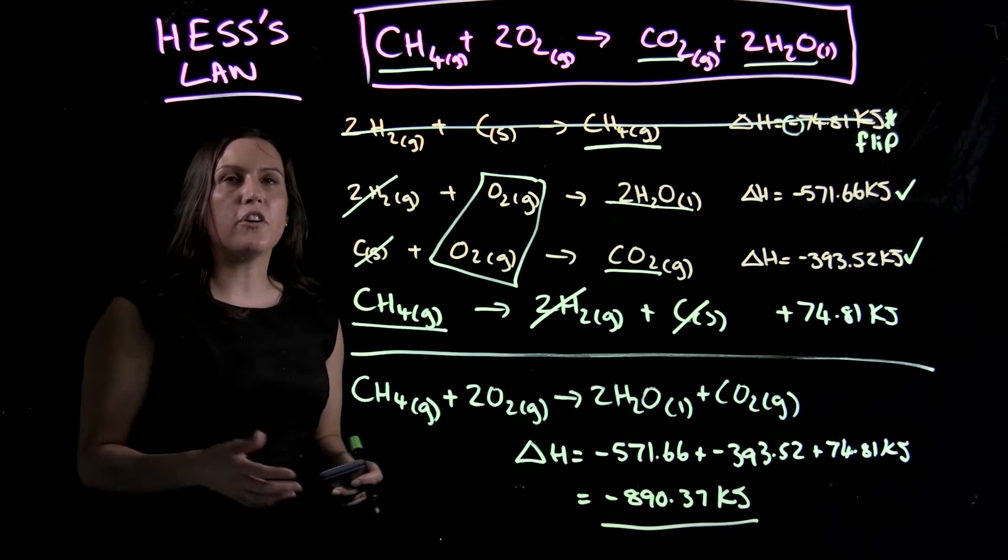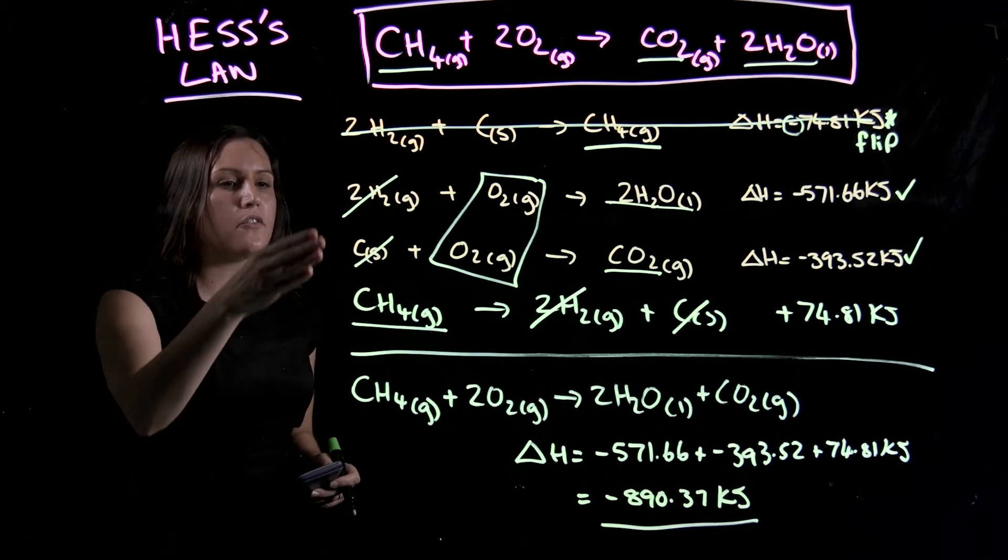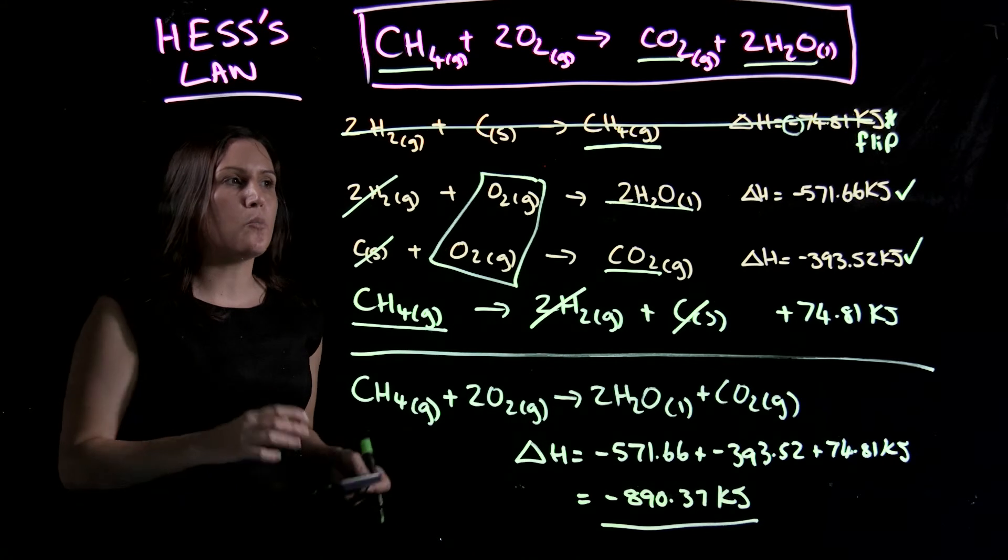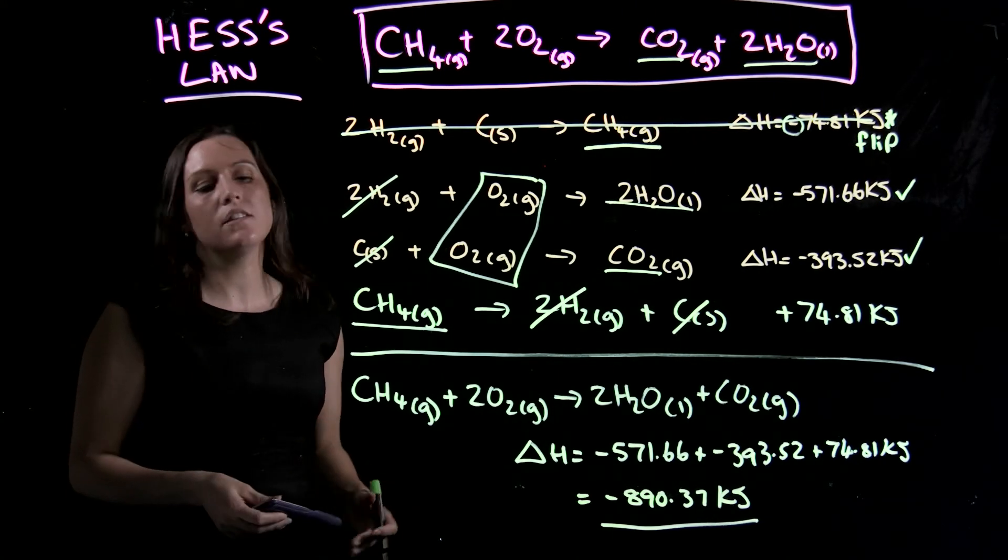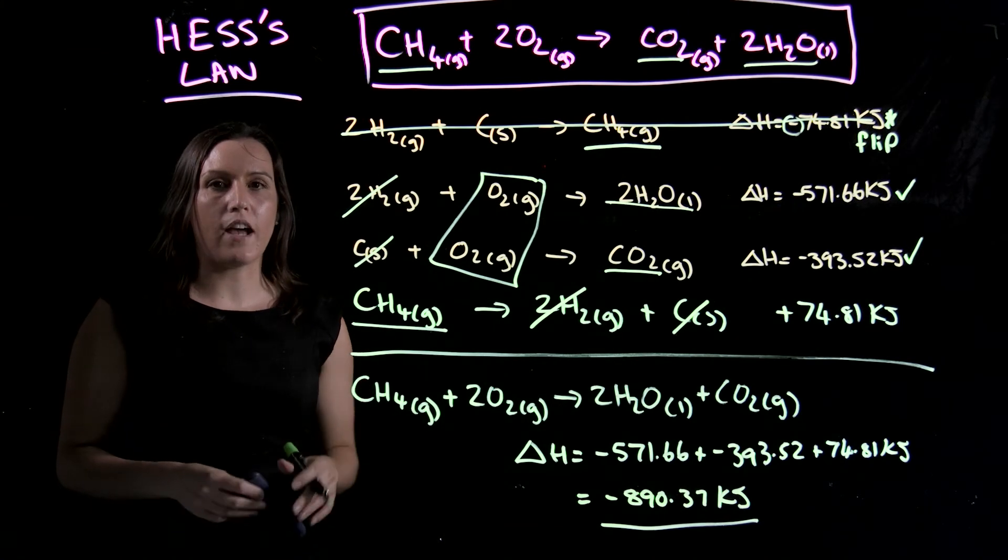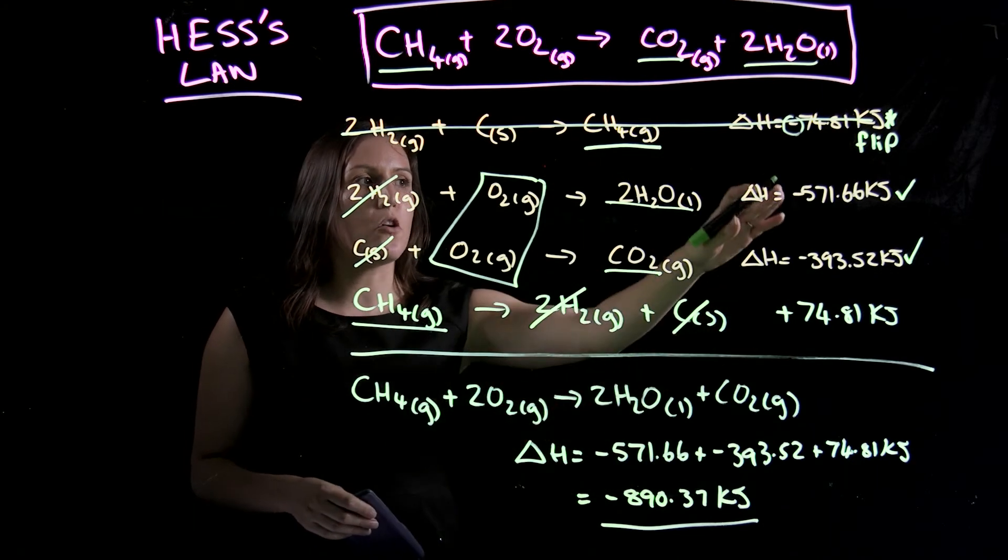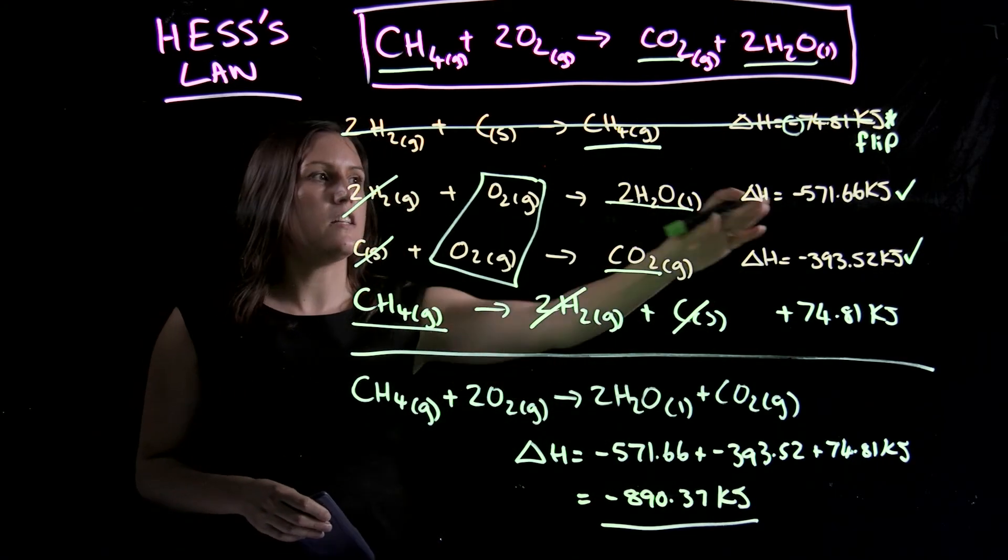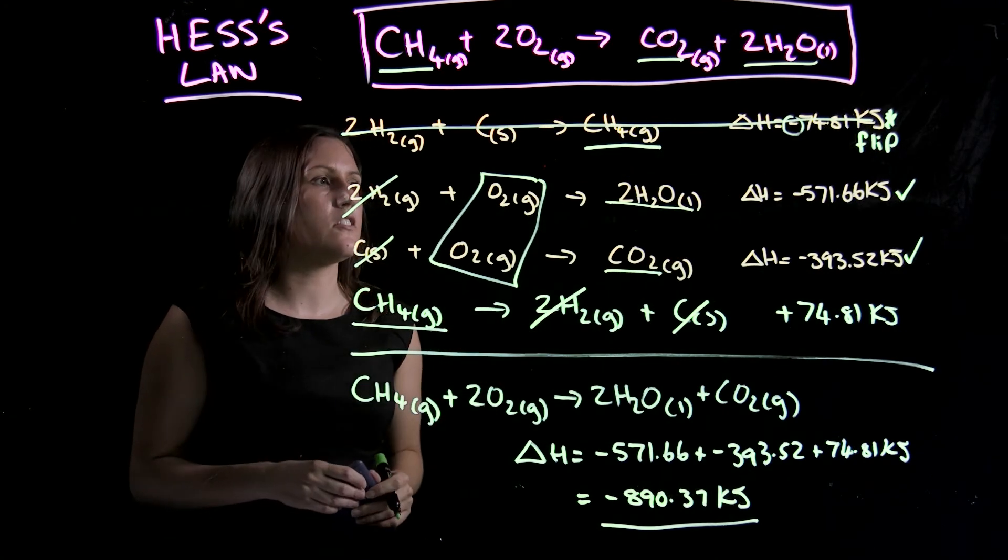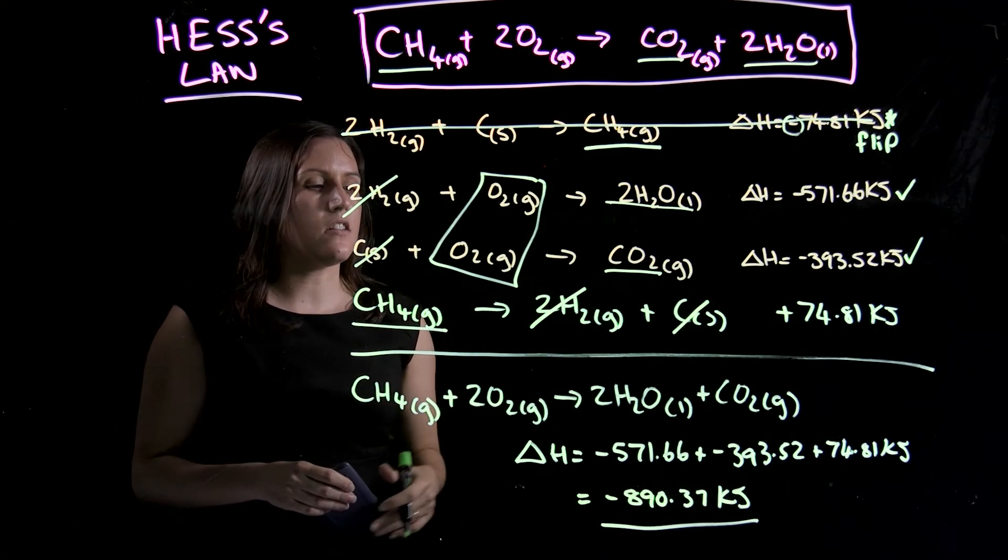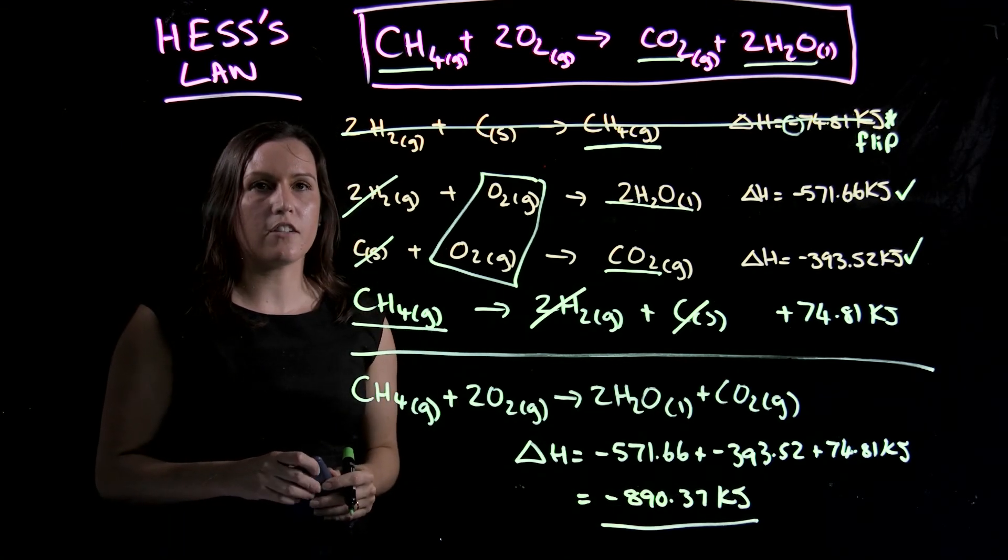So that's the process using Hess's law. Okay, so you've got your overall reaction, you've got your half reactions, and you flip or multiply or divide even. It can be by fractions or whole numbers until you achieve the overall reaction that you had at the start. And then adding up your delta H's. Remembering if you multiply your reaction, you need to multiply your delta H. If you divide, you have to do the same to your delta H. If you flip, you change the sign. And then you add them all up at the end, and you end up with your delta H for the reaction.